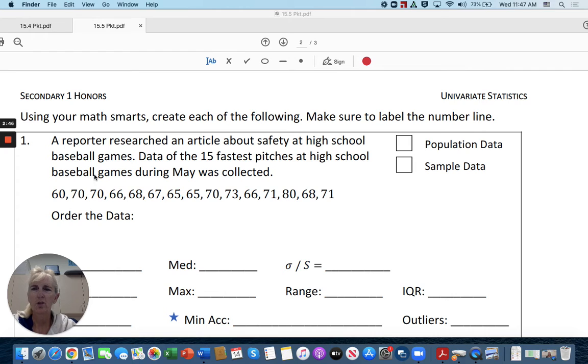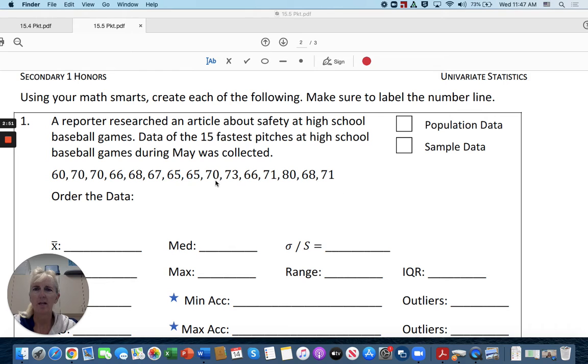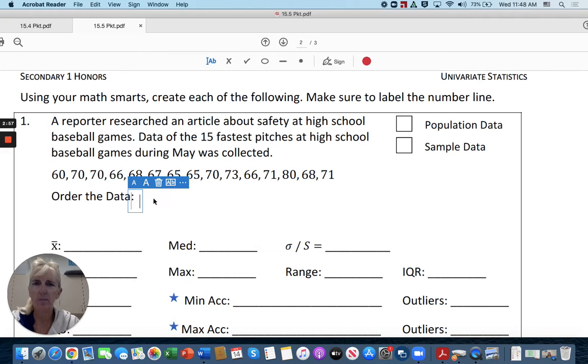And maybe some of this won't make sense until we actually get in and start doing some of this. So using your math smarts, create each of the following. Make sure to label the number line. So first we need to order the data. So here we're going to order the data. So we go the smallest number. Let's see. 60.